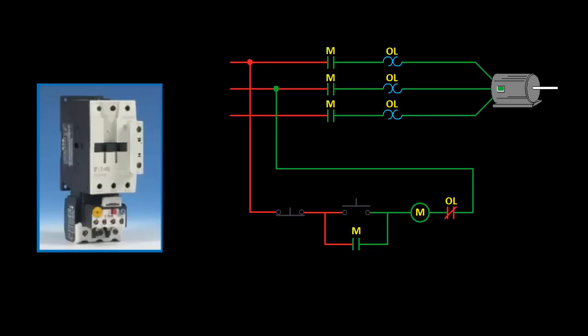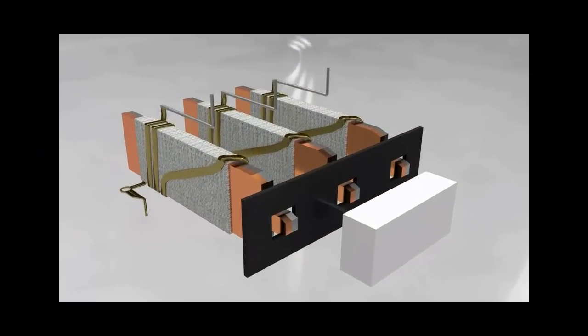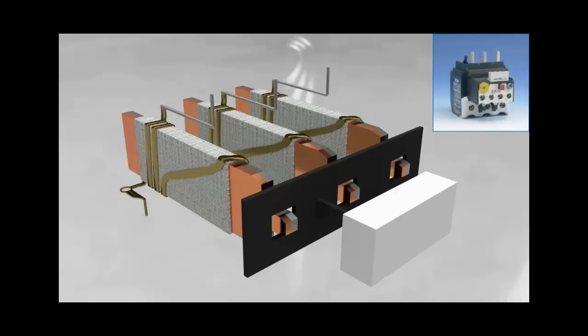So now let's take a look at it from the mechanical perspective and see how it actually works. If we were to go inside of a bimetallic overload relay, it would look something like this. Now all of them are going to look a little bit different, but they all have these main components. This one was modeled after Eaton's XTOB.